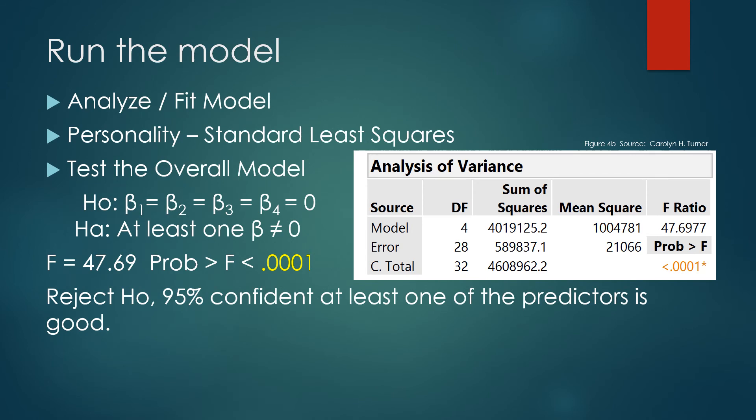When we run the model, we'll use Analyze Fit Model. Again, click on the personality standard least squares and we'll set up a hypothesis to test the overall model. H0 will say beta 1 equals beta 2 equals beta 3 equals beta 4 equals zero. I knew to use four betas because stepwise had said there were four good predictors. HA will say at least one of those betas is not zero. So here we're just determining is anything a good predictor, even though we know from stepwise that we did have four good ones. The test statistic is F under Analysis of Variance. Find the F ratio, 47.697. Its p-value is less than .0001, therefore we reject H0 and at least one of those predictors is good.